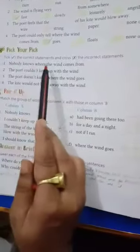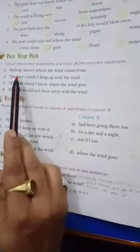Now question number 4. It is the true false. Tick the correct statements. Question number 5. Nobody knows where the wind comes from. Right, right.